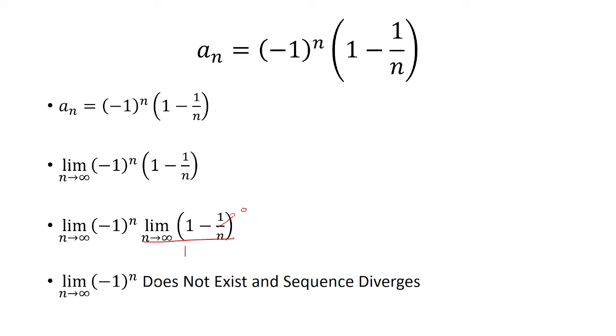The limit has to be a unique value, and because it doesn't exist, we say the sequence diverges.